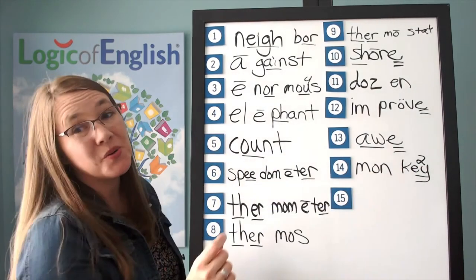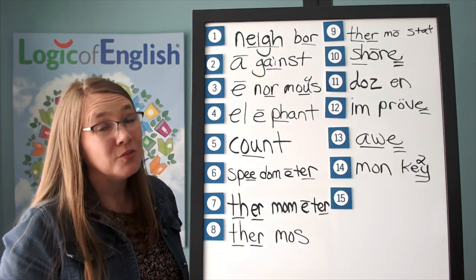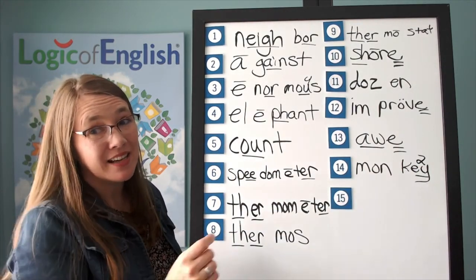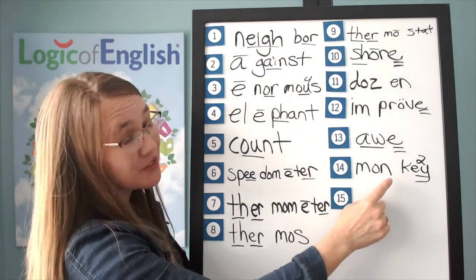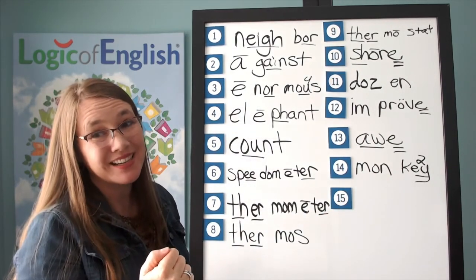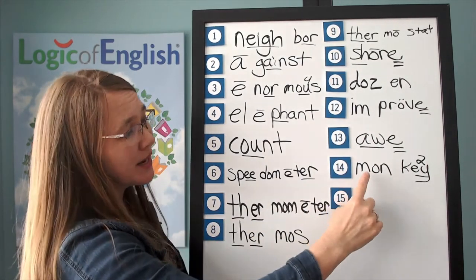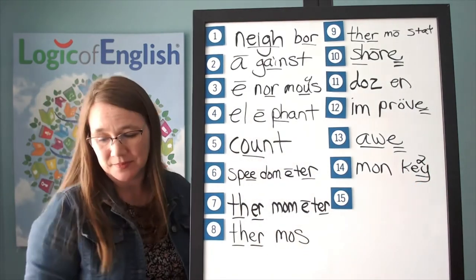Here the O said UH. Why? O may say UH next to a W, T, H, M, N, or V. There it is — it's next to an M and an N. Let's read it: M-AW-N-K-E. Monkey.